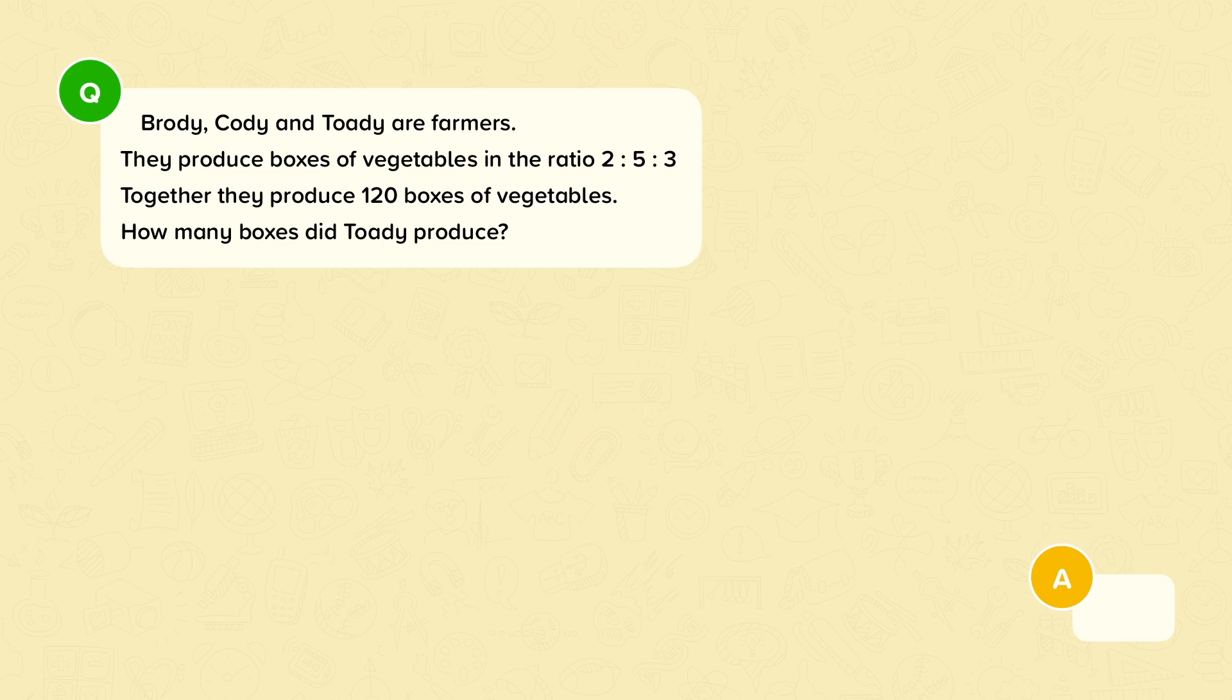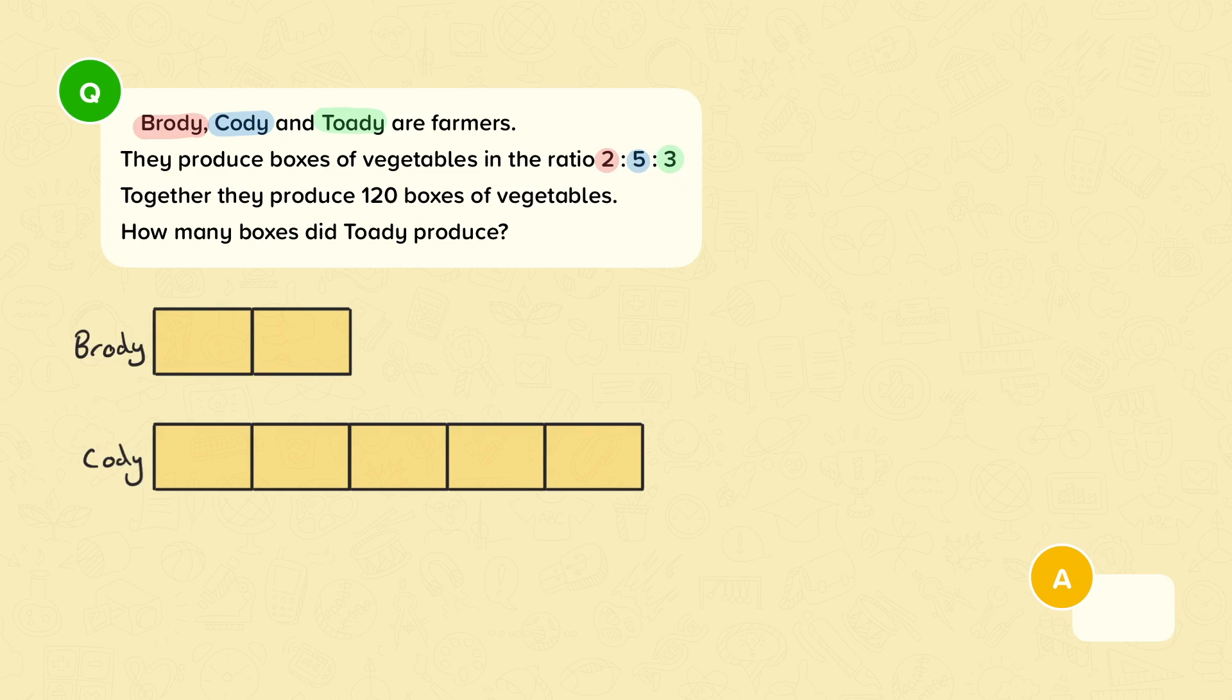Here's how it's done. First, we model the ratio. There are three parts in this ratio because there are three people. Brodie is first, so she has two parts because that's the first number in the ratio. Cody has five parts and Toady has three parts. So now let's draw two parts for Brodie and label it. Five bars for Cody and label it. And then three bars for Toady and label it. We know that the total amount of boxes made is 120. So we show that on the bar model.